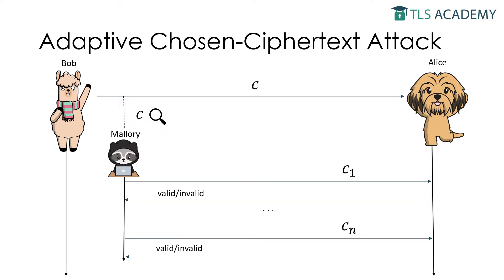To achieve this, Mallory could make use of a side channel on the receiver side, which responds with different error messages depending on whether or not the message has a correct padding. This process is repeated until Mallory is able to reconstruct the original plaintext message M.